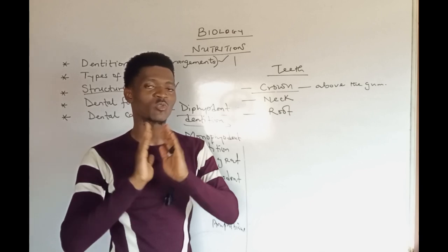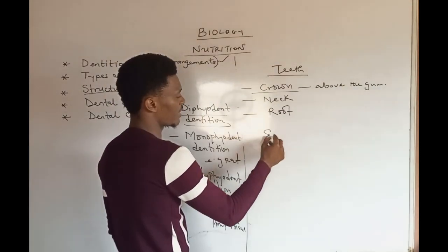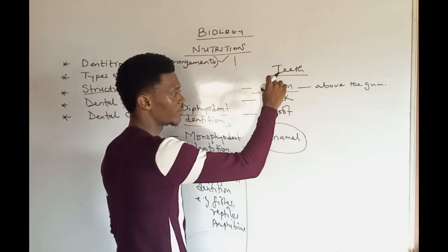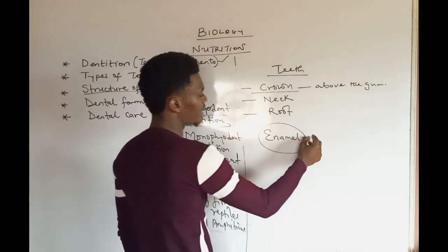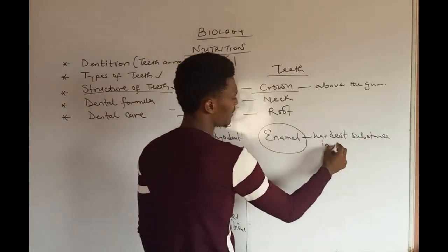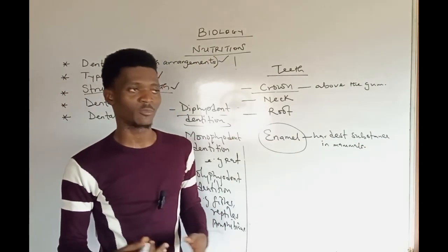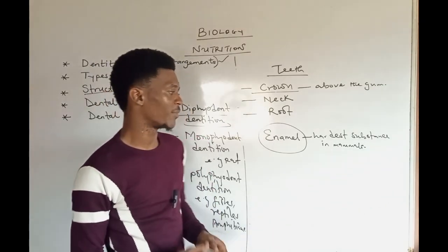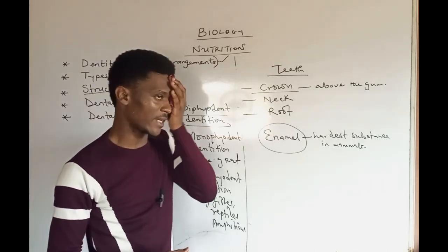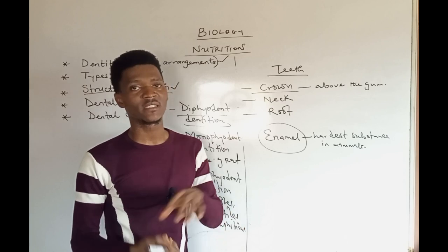The crown is whitish, meaning it is covered by a hard material which is considered to be the hardest substance in mammals — called enamel. Enamel is found on the crown of the teeth and is strengthened by calcium compounds such as calcium phosphate or calcium carbonate. Just beneath the enamel of the crown, you have the dentine, which is protected by the enamel.